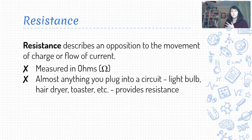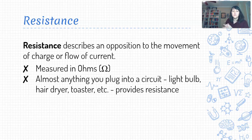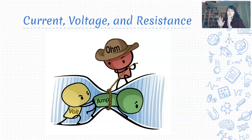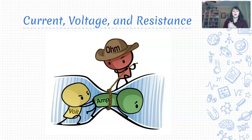So we've got voltage propelling our current forward, current as the thing actually moving through our circuit, and then resistance trying to slow it down. Whether we're talking about a light bulb, your refrigerator, or a music player, all of those things ultimately provide resistance, slowing down our circuit. Our current is trying to move through the circuit, voltage is the thing propelling it forward, but resistance — measured in ohms — is trying to make it more difficult.